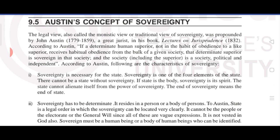According to Austin, the following are characteristics of sovereignty: Sovereignty is necessary for the state — it is one of the four elements of the state. There cannot be a state without sovereignty. If the state is the body, sovereignty is its spirit. The state cannot alienate itself from sovereignty; the end of sovereignty means the end of the state. Sovereignty must reside in a determinate person or body of persons. It cannot be vested in the people, the electorate, or the general will, nor in God — it must be a human being or body of human beings who can be identified.